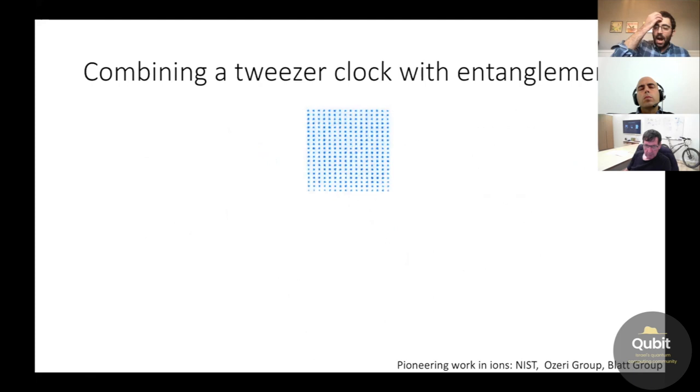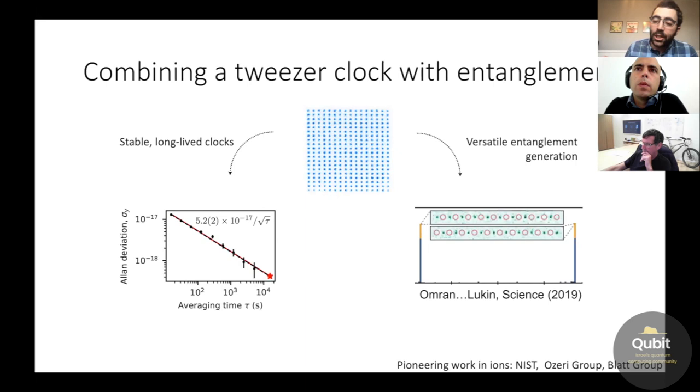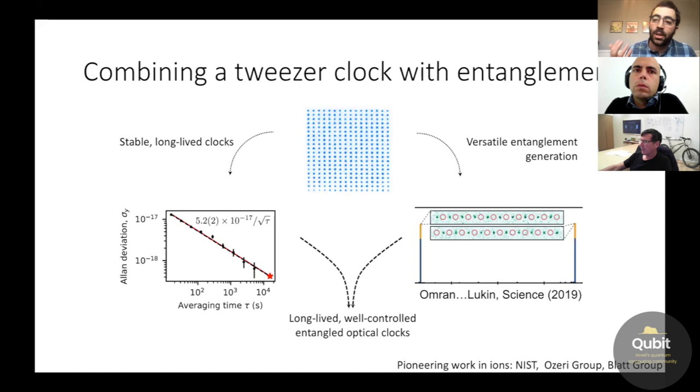So this is a quantum metrology talk. In the time that I have left here, I want to try to make a connection between the topics that Antoine was describing and this tweezer clock direction. And I think people can probably anticipate where this is going. I've just told you about how you can use these tweezer systems to make a long lived stable clock. We just heard from Antoine how Rydberg interactions can be used to engineer entanglement in these systems. So naturally we'd like to understand whether we can make long lived well controlled entangled clocks. So it's important first to understand why this is a compelling direction. Why would one want to combine entanglement with a clock?